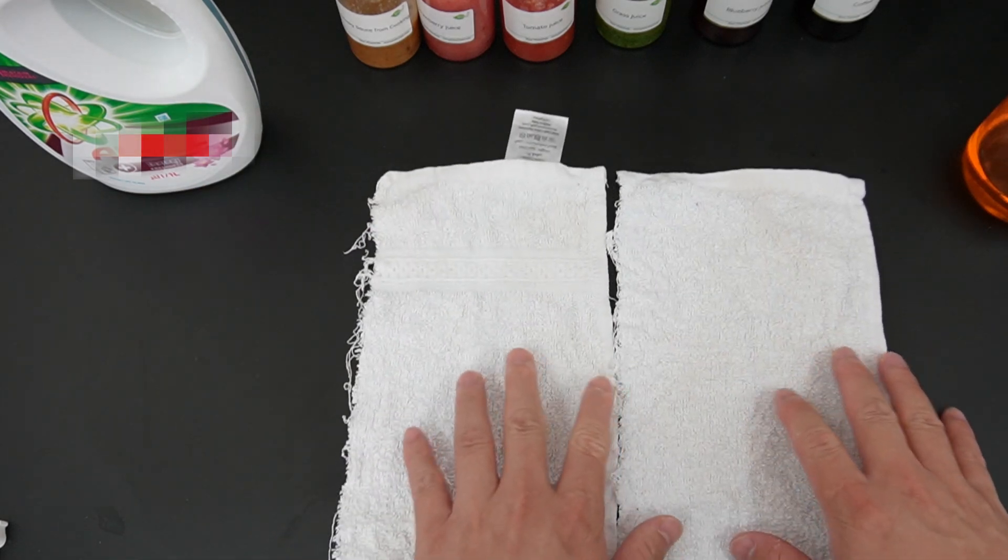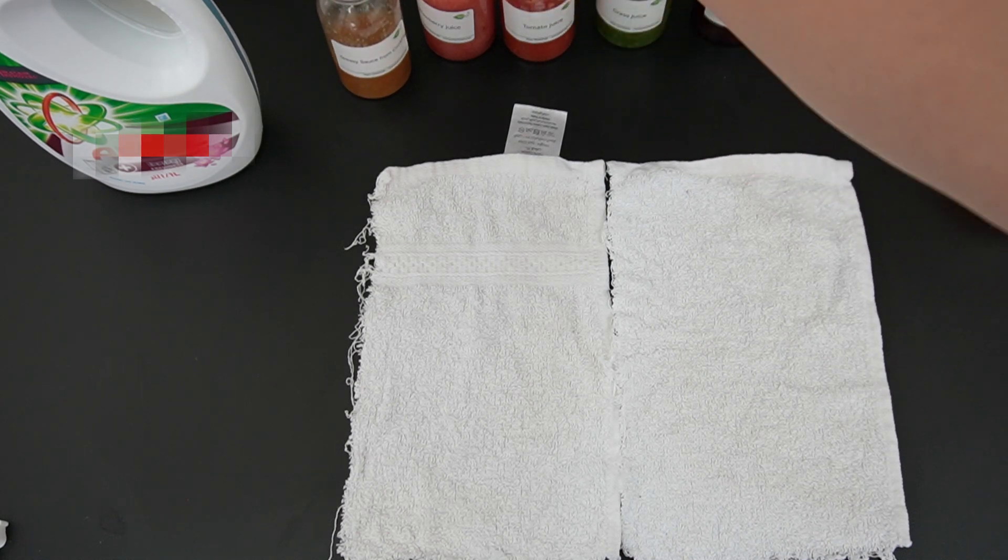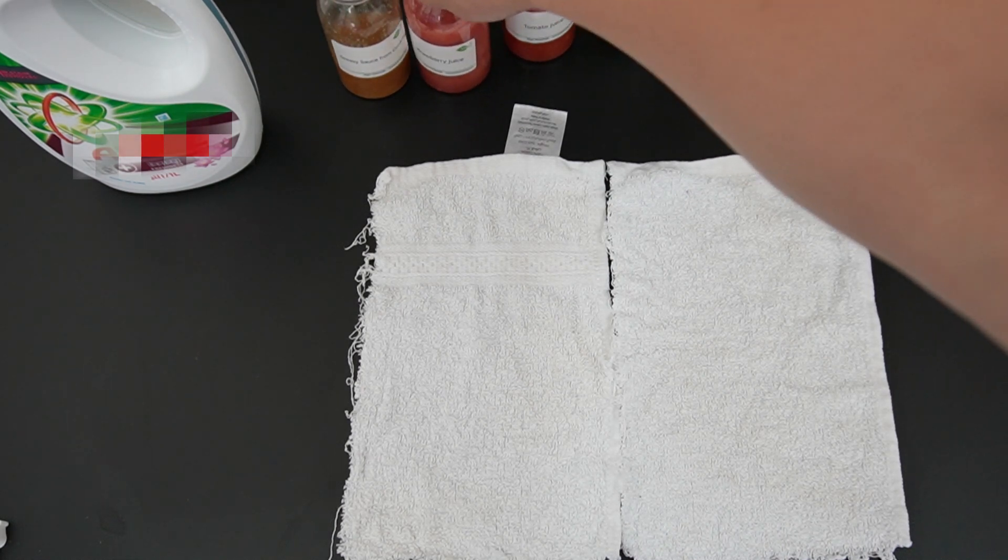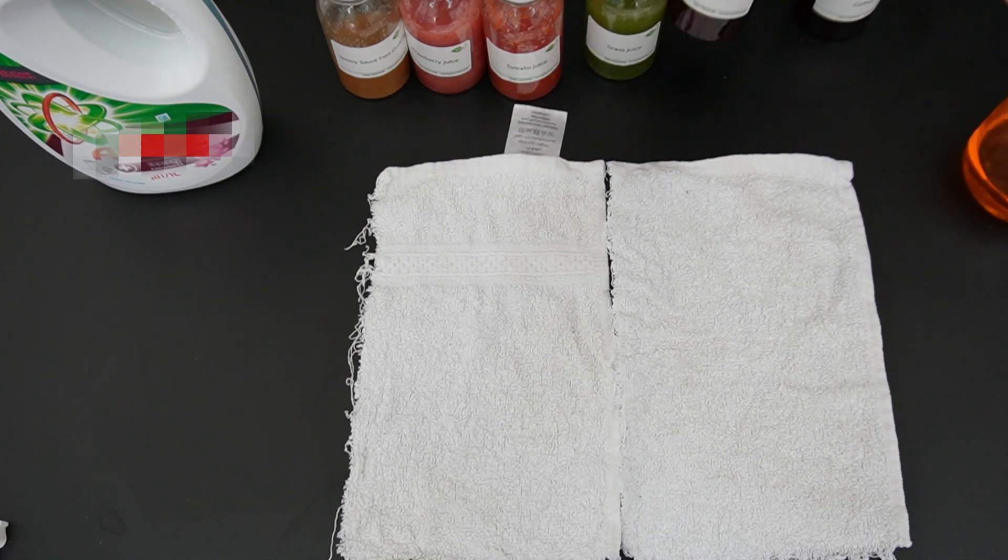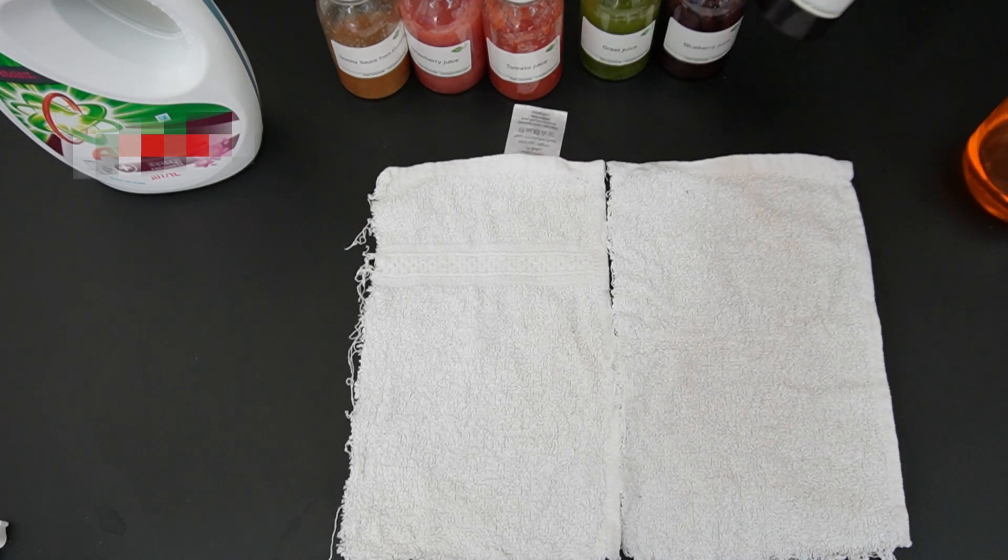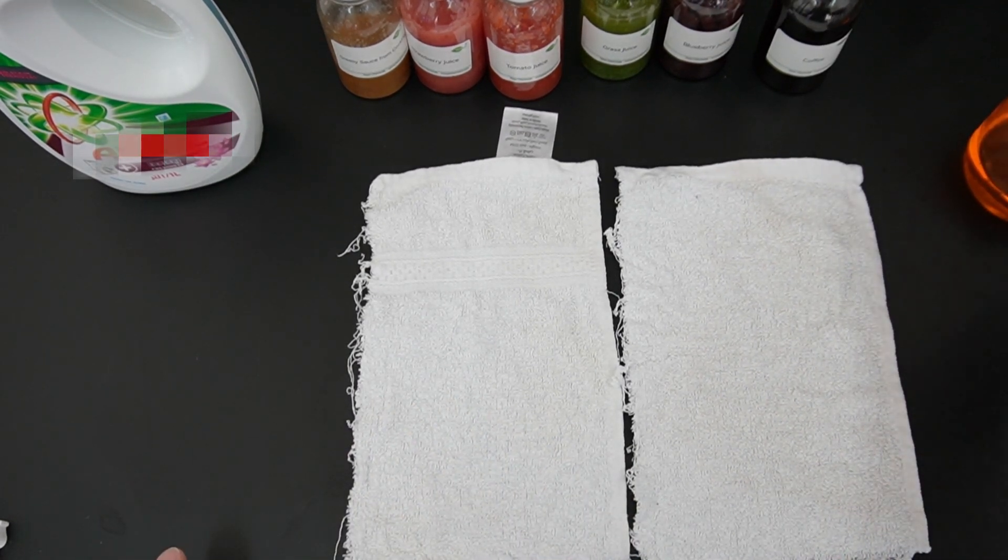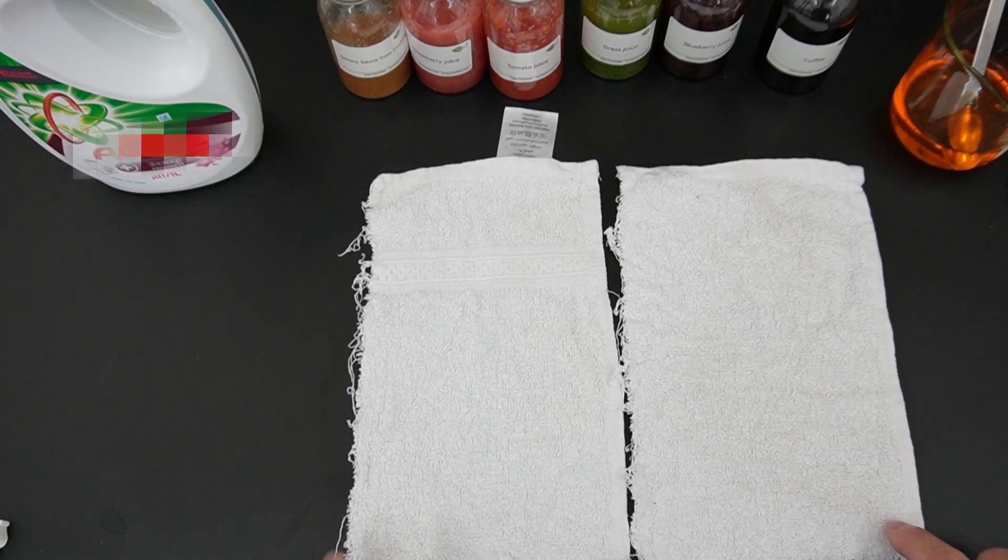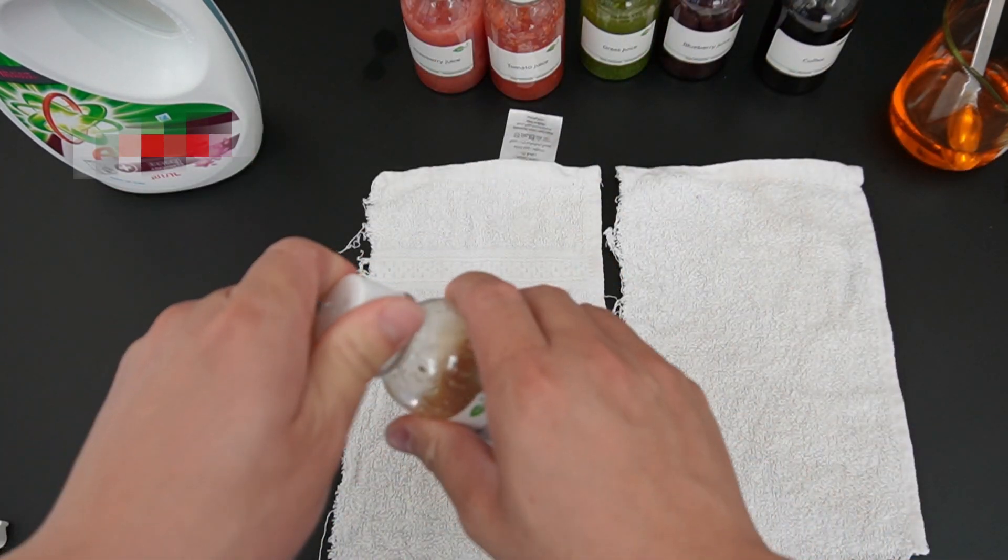We'll make the dirty clothes from stains like greasy oils, strawberry juice, tomato juice, grass juice, blueberry juice, and coffee. We can see how they perform. Let's start making the stained clothes.